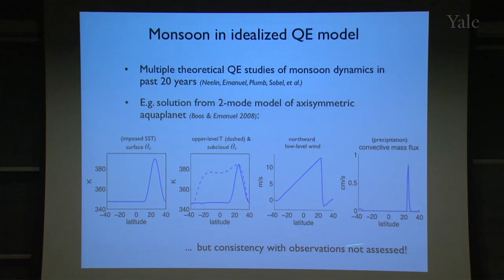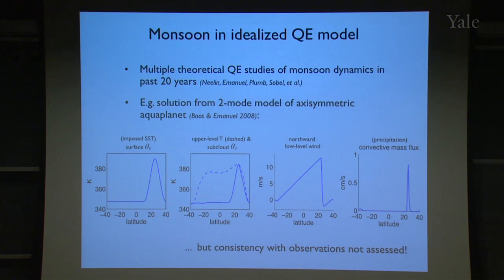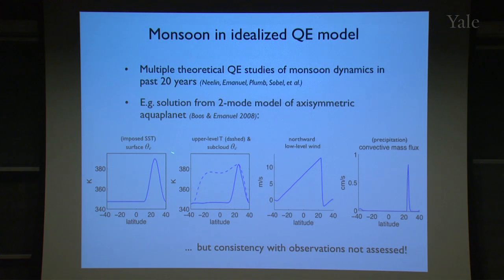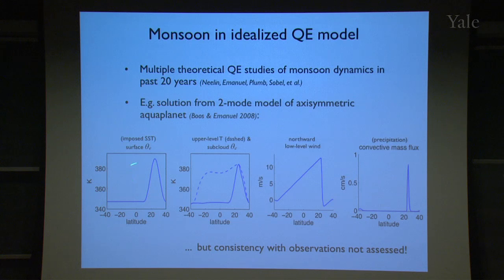I want to show results from a simple model to illustrate how this works when we enforce convective quasi-equilibrium. This is a two-layer model where the troposphere is divided into two layers — air converges in the bottom layer and diverges in the top layer with a mass flux between them. We simulate a monsoon circulation without a continent by putting in an off-equatorial sea surface temperature anomaly as a proxy for the land surface thermal forcing you'd get in a monsoon climate.